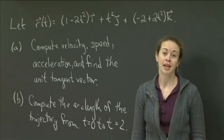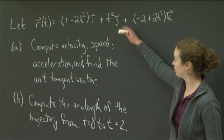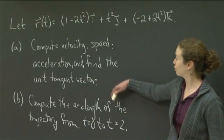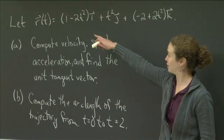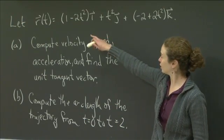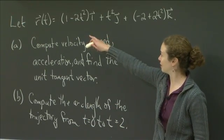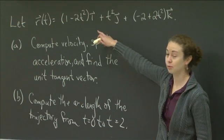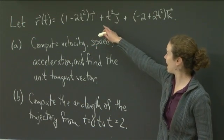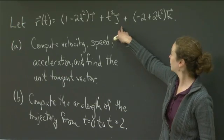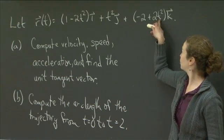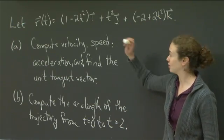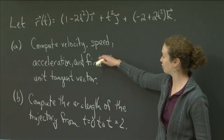Welcome back to recitation. In this video, I'd like us to do the following two problems, both related to the same position vector. So we're starting off with a position vector defined as r(t) equals (1 - 2t²)i + t²j + (-2 + 2t²)k. So that's our position vector.